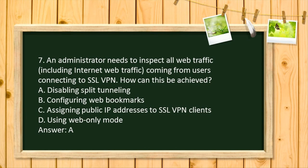Question 7. An Administrator needs to inspect all web traffic, including Internet web traffic, coming from users connecting to SSL VPN. How can this be achieved? A. Disabling split tunneling. B. Configuring web bookmarks. C. Assigning public IP addresses to SSL VPN clients. D. Using web-only mode. Answer: A.